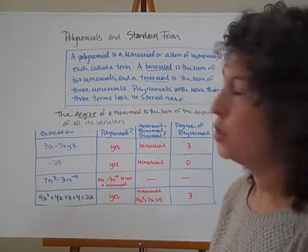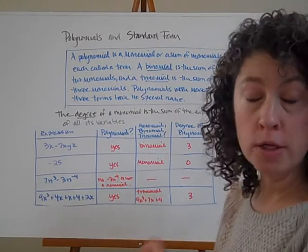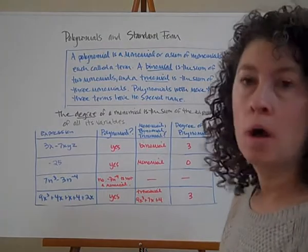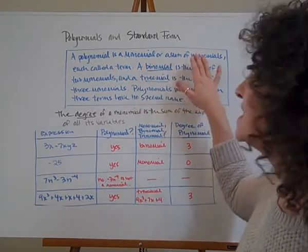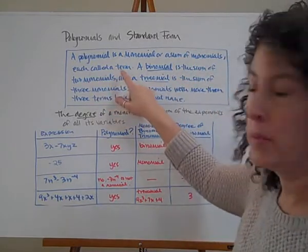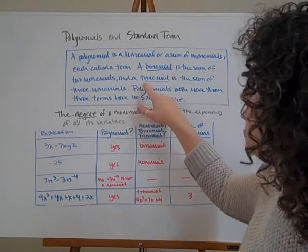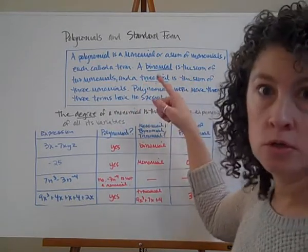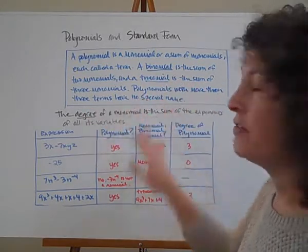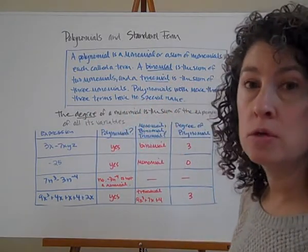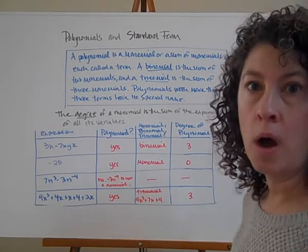Polynomials and standard form. With this chapter we're going to work with polynomials — we've been working with monomials up until now. A polynomial is a monomial or a sum of monomials, each called a term. A binomial is the sum of two monomials, and a trinomial is the sum of three monomials. Polynomials with more than three terms have no special name. Monomials, binomials, and trinomials all fall under the category of polynomials.